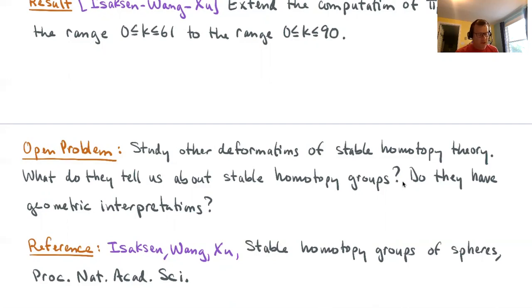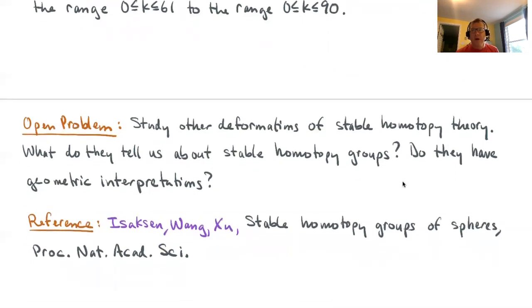The answer to this first question is yes. Already we have some preliminary calculations that tell us they do tell us something new about stable homotopy groups. The second question, we really have no idea currently about the interpretations. If you'd like to read a little bit more about this, you can take a look at a survey article called Stable Homotopy Groups of Spheres in the Proceedings of the National Academy of Sciences.